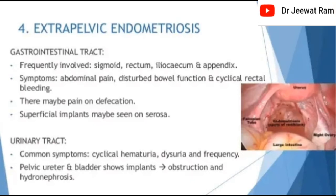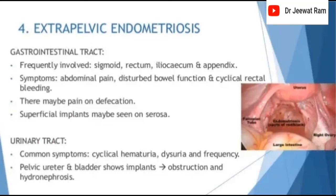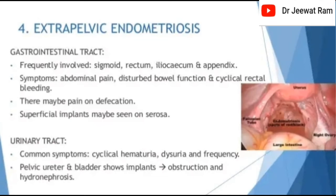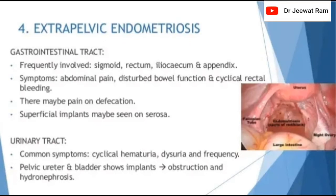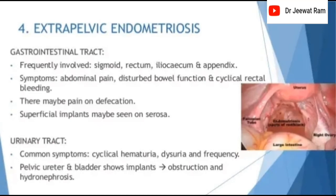Extrapelvic endometriosis — gastrointestinal tract: frequently involved sites are the sigmoid rectum, ileocecum, and appendix. Symptoms include abdominal pain, disturbed bowel function, cyclical rectal bleeding, and pain on defecation. Superficial implants may be seen on the serosa. Urinary tract: common symptoms are cyclical hematuria, dysuria, and frequency. The pelvic ureter and bladder show implants.